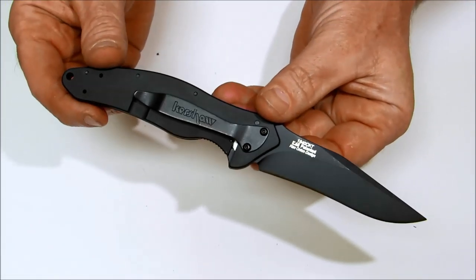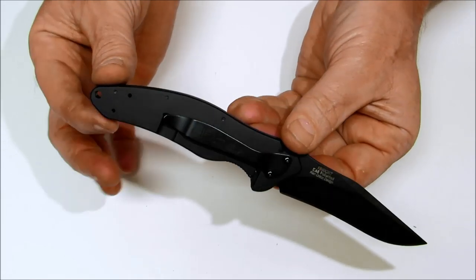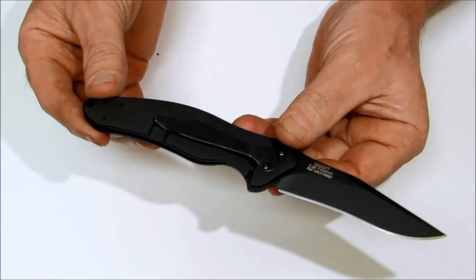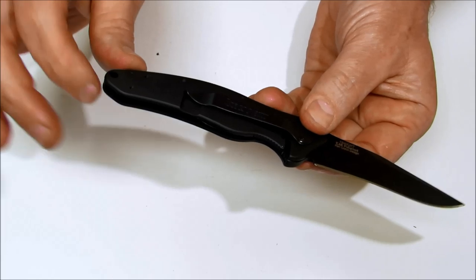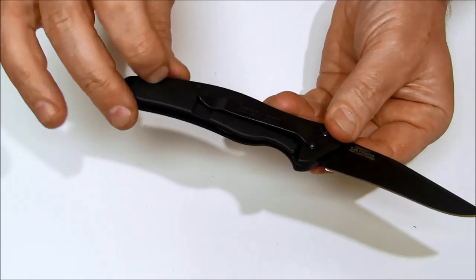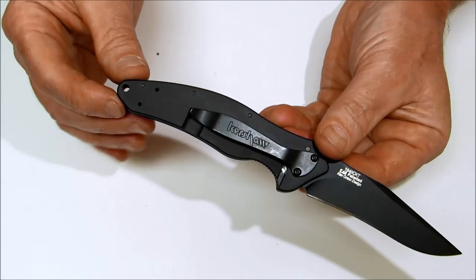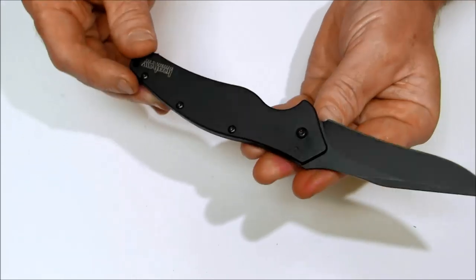You have a pocket clip mounted at the forward end for right hand side carry and you also have a lanyard hole here. This pocket clip is reversible so you can mount it on the butt end for tip up or forward end for tip down carry.